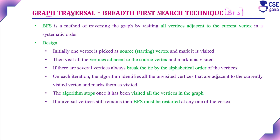So what is graph traversal? Graph traversal means visiting all the vertices in the given graph in any systematic order. There are two methods in graph traversal: one is BFS, Breadth First Search technique, and the other is DFS, Depth First Search technique.